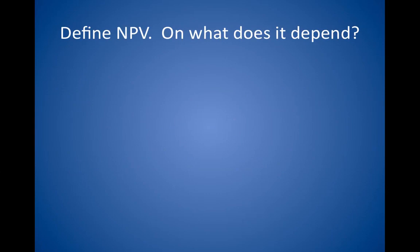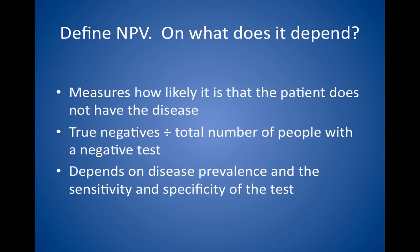Define negative predictive value, or NPV. On what does it depend? When a test comes back negative for disease, the NPV measures how likely it is that the patient is healthy and does not have the disease — the probability of not having a condition given a negative test. It is calculated mathematically by dividing the number of true negative results by the total number of people with a negative test. NPV also depends on the prevalence of the disease and the sensitivity and specificity of the test. The higher the prevalence, the lower the NPV. In addition, an overly sensitive test with lots of false positive results makes the NPV higher.